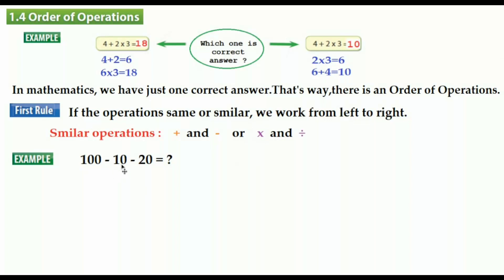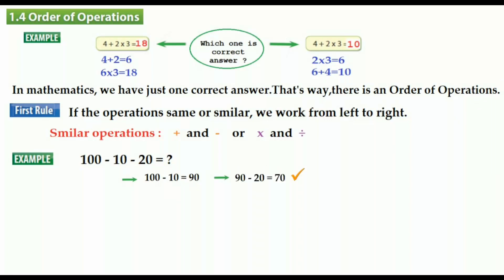Let's start with an example: 100 minus 10 minus 20. We have two subtraction operations — these are the same kind. We cannot start from the middle; we have to start from the left. So first, 100 minus 10 equals 90. Then 90 minus 20 equals 70. Seventy is the correct answer.